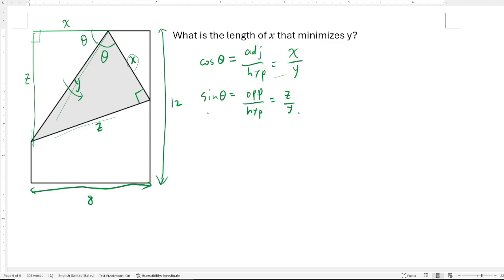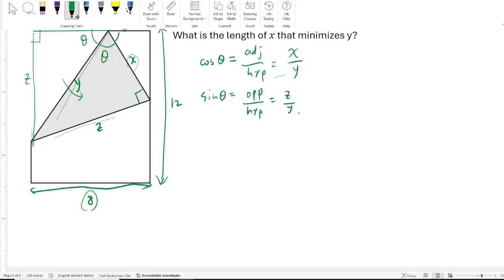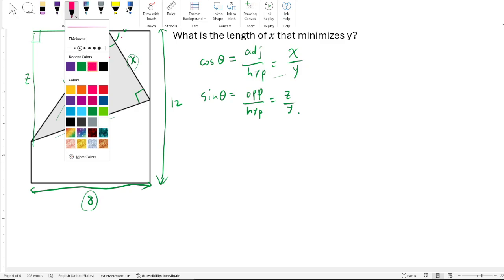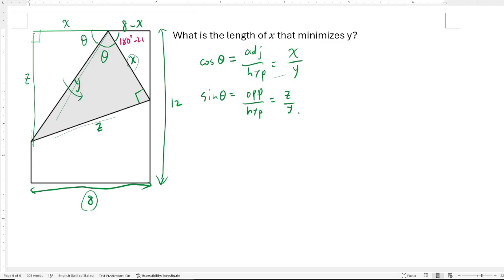Now using this length 8, we see that this length must be 8 minus x, and this angle here, that angle is going to be 180 degrees minus 2 theta, and this is the important idea.